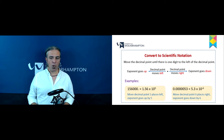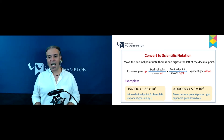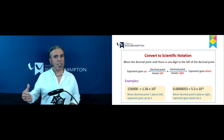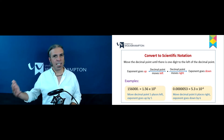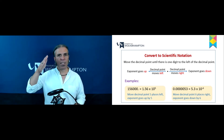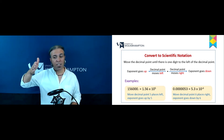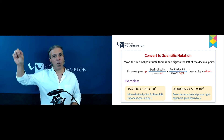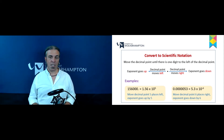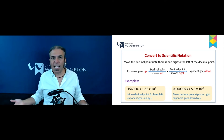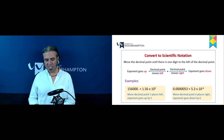Similarly, if we've got 0.0000053, we can use scientific notation to make that 5.3 × 10⁻⁶ by simply moving the decimal point six places to the right. When we move to the right, the exponent must go down and become a minus number. We don't have to do any calculations — all we've got to do is move the decimal point around, and that's nice and easy.